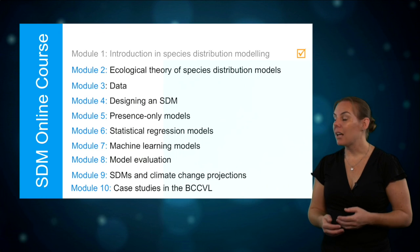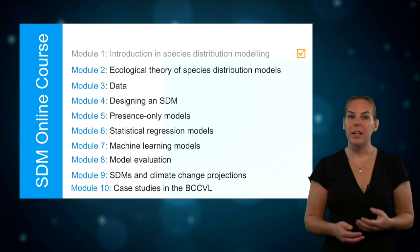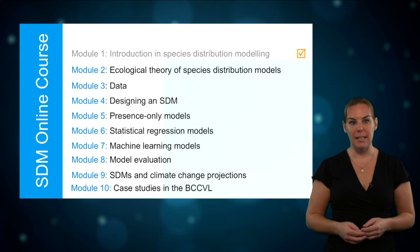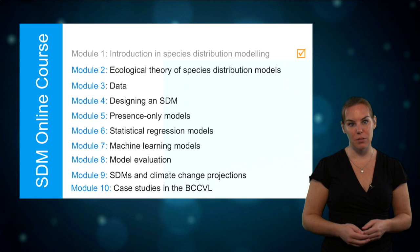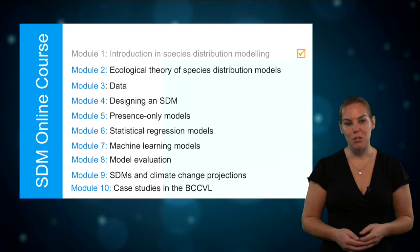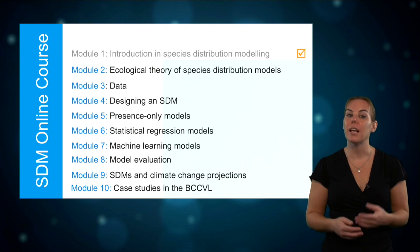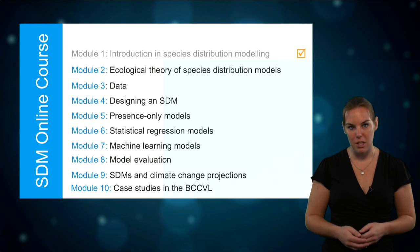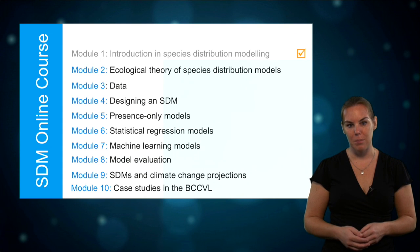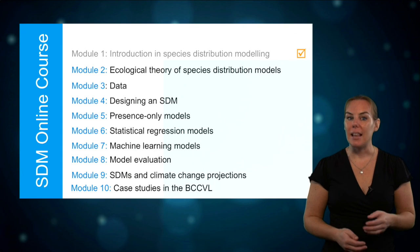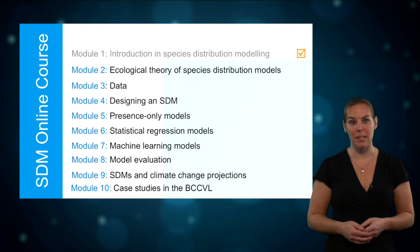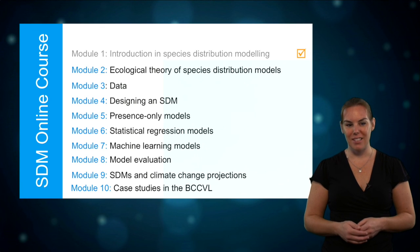And in the last module of this course, we will introduce the BCCVL — the Biodiversity and Climate Change Virtual Laboratory. This is a tool that lets you run species distribution models, including climate change projections, in a few easy steps. In that last module, we will illustrate how to use the BCCVL with a few case studies.